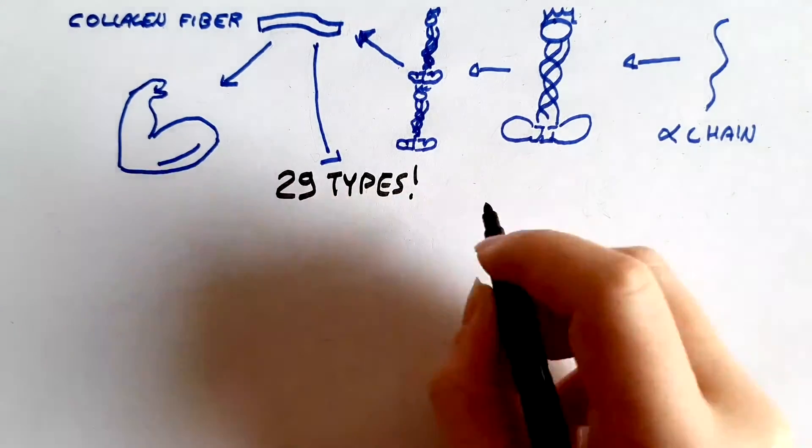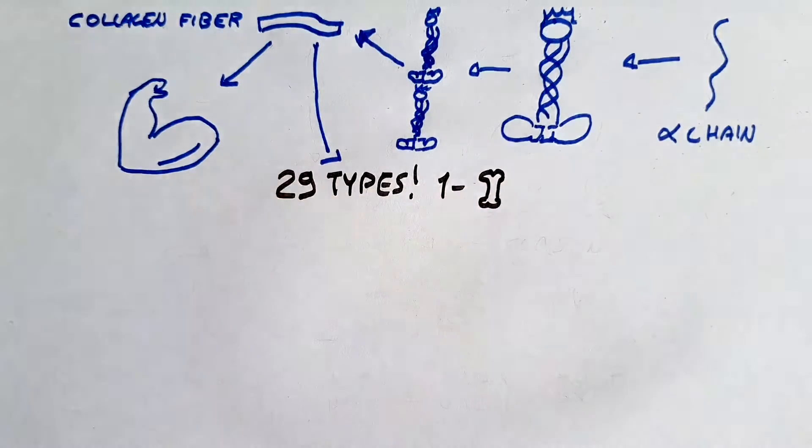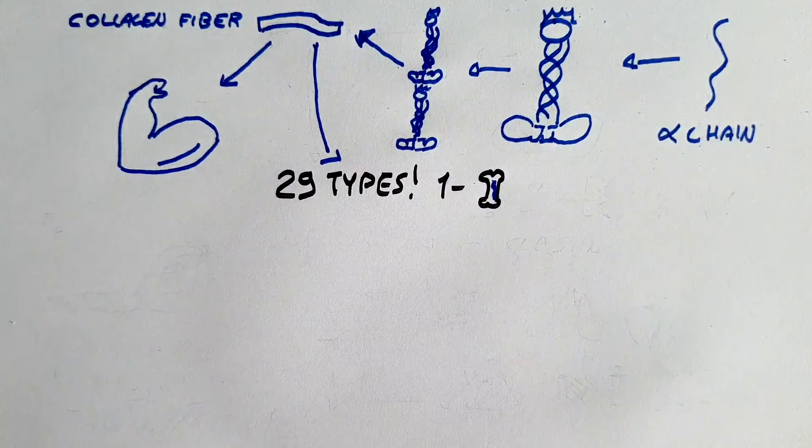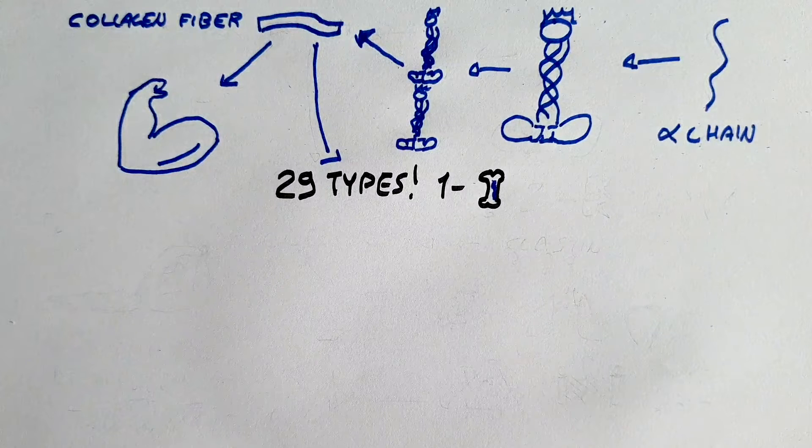We have 29 types of collagen depending on the presence of glycine, proline, and hydroxyproline in the alpha chains. The most frequent collagen typologies are type 1 collagen, which is the most abundant protein in our body. It is ubiquitous and resistant to force, tear, and stretch, and we can observe it in bones.